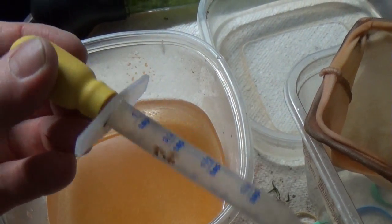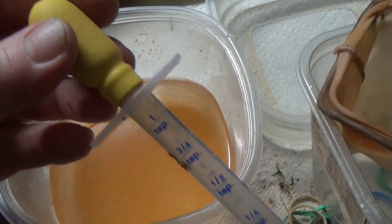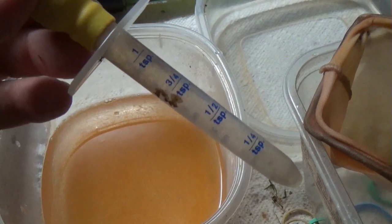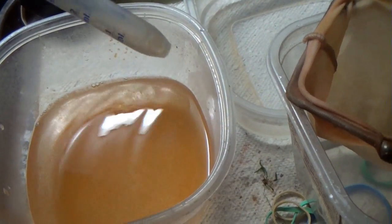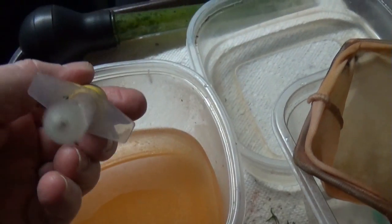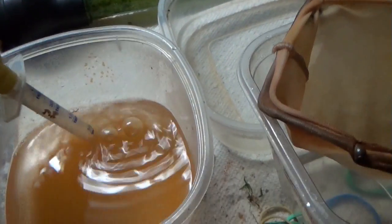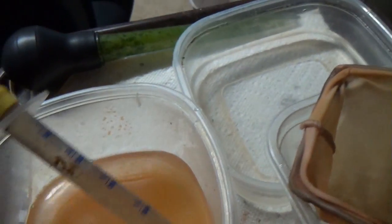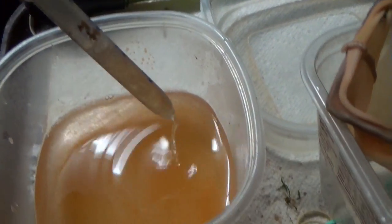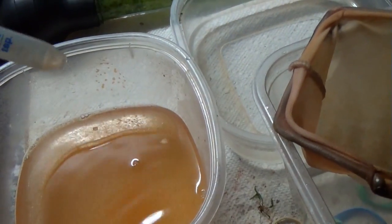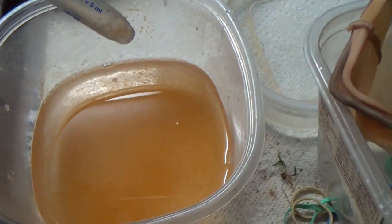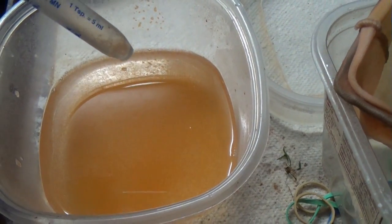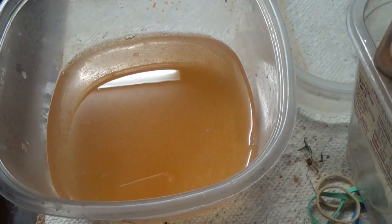For feeding, I use one of these eyedroppers you get over in the pharmacy at the grocery store or Walmart or whatever, for giving stuff to babies. It's got a bigger hole, holds more than a regular eyedropper, so you can suck a lot up for feeding to your fish. They cost two and a half, three bucks, last for a very long time.